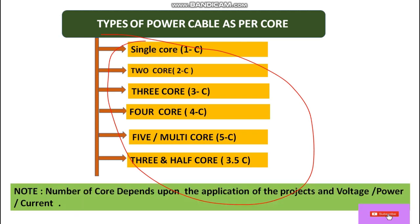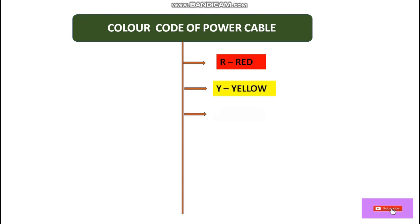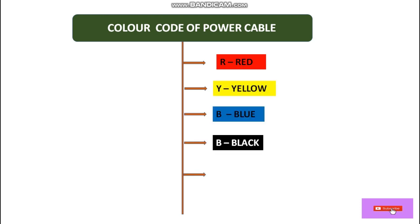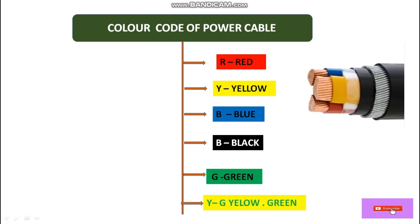Now let's talk about the color codes of the cable. One thing to remember: the number of cores depends upon the application of the project and the voltage and current levels. Generally we have red, yellow, blue, black, and green — and also yellow-green — as color codes.